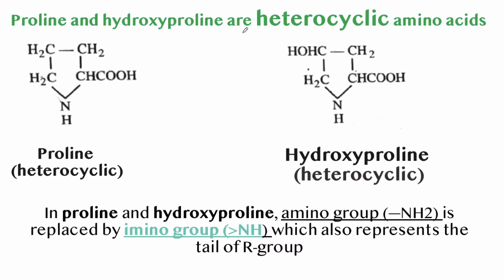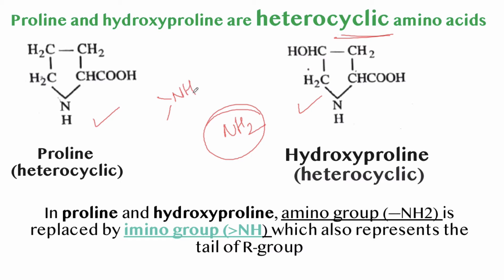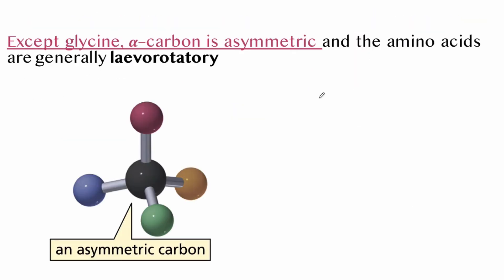Proline and hydroxyproline are heterocyclic amino acids. In both proline and hydroxyproline, the NH2 group is replaced by an amino group (NH) which is involved in the formation of the ring structure.